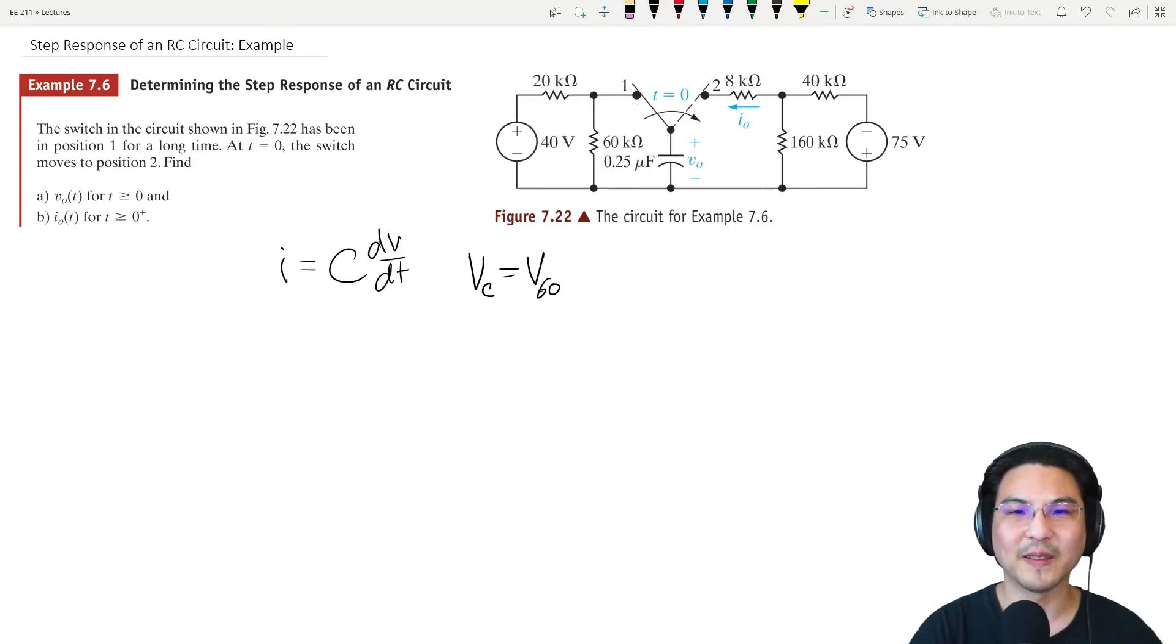It's 40 volts times 60 over 60 plus 20, so that's 60 over 80, that's three-fourths, so 30 volts.